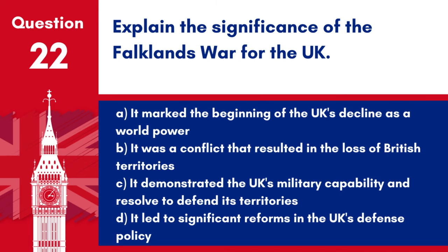Question 22: Explain the significance of the Falklands War for the UK. a. It marked the beginning of the UK's decline as a world power. b. It was a conflict that resulted in the loss of British territories. c. It demonstrated the UK's military capability and resolve to defend its territories. d. It led to significant reforms in the UK's defence policy. Answer: c. The Falklands War in 1982 was a conflict between the UK and Argentina over the Falkland Islands, with the UK successfully reclaiming the islands.